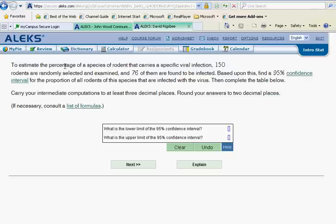To estimate the percentage of a species of rodent that carries a specific viral infection, 150 rodents are randomly selected and examined, and 76 of them are found to be infected.